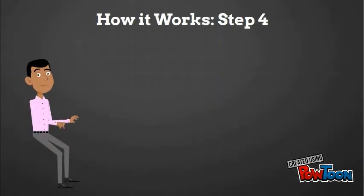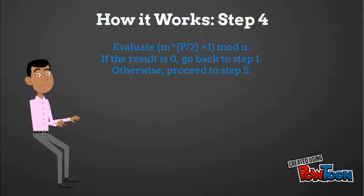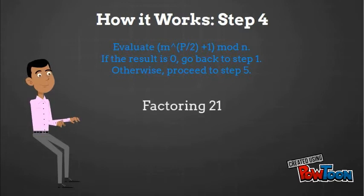Jack then solves the congruence m to the power of the period divided by 2 plus 1 mod n. If the result is 0, he tells Joe to start over by picking a new number. Otherwise, he passes the number onto John. 13 to the power of 2 divided by 2 plus 1 is congruent to 14 mod 21, so he is able to pass the number onto John.